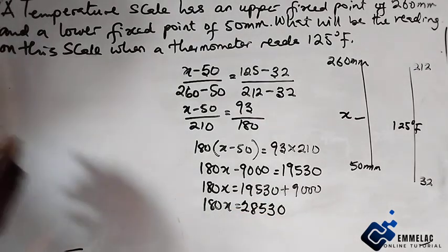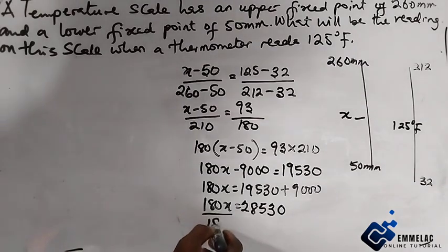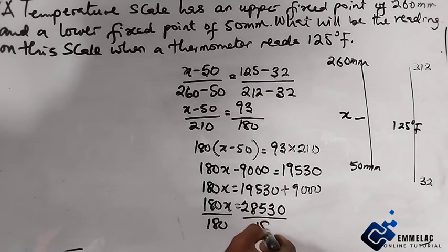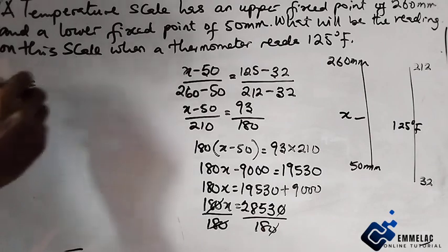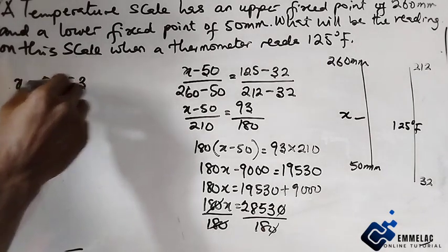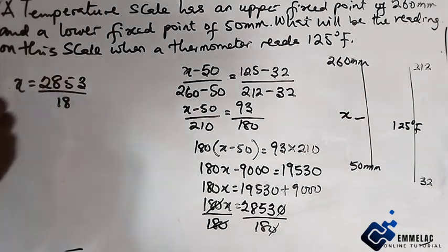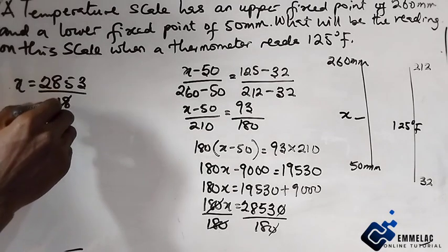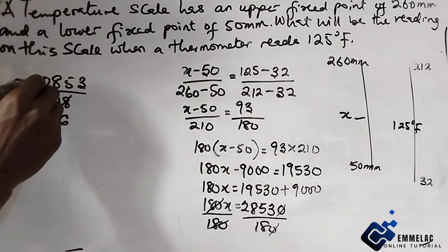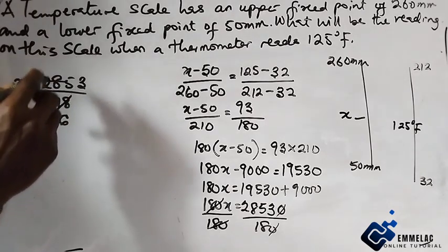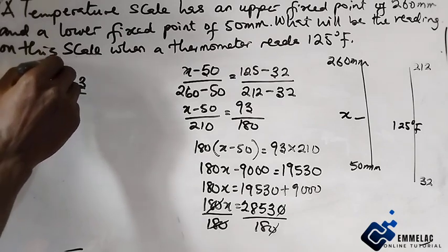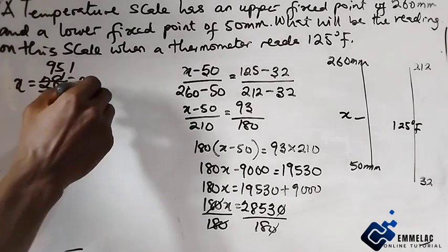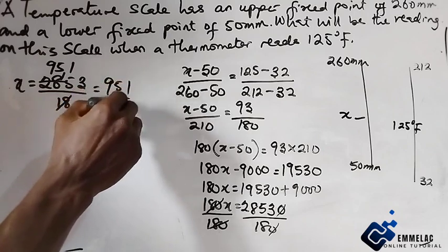Next thing, we have to divide both sides by 180. So we have x equals 28530 over 180, which simplifies to 9510 over 60, then to 3170 over 20, then to 951 over 6.